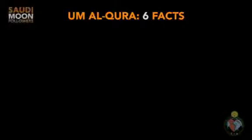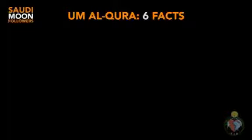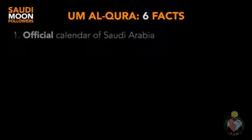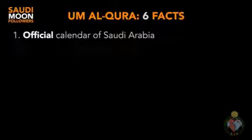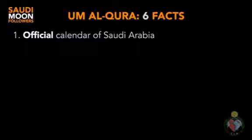Don't rely on us. There are six things that you need to know about the Umm al-Qurah calendar. The Umm al-Qurah calendar is the name given to Saudi Arabia's official calendar, which is used for administrative and civic purposes.